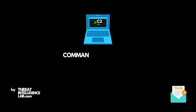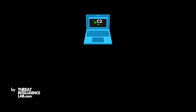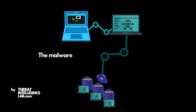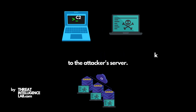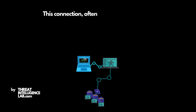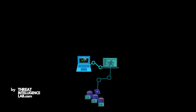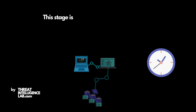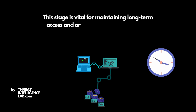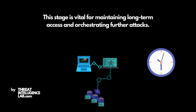Next, the command and control phase. The malware establishes a covert channel back to the attacker's server. This connection, often encrypted, allows the attacker to remotely command the malware, turning the infected system into a puppet. This stage is vital for maintaining long-term access and orchestrating further attacks.